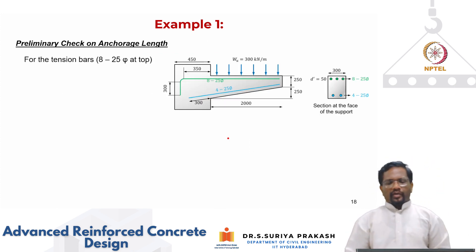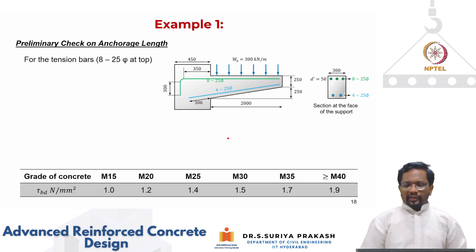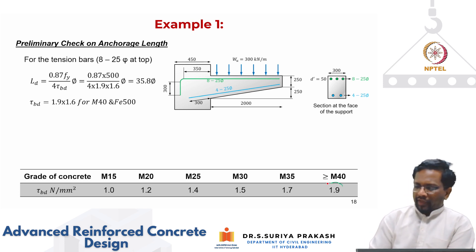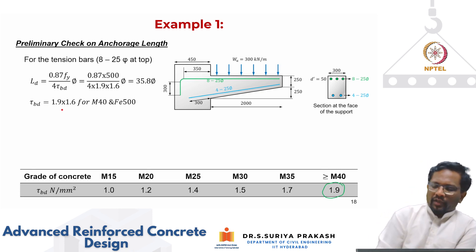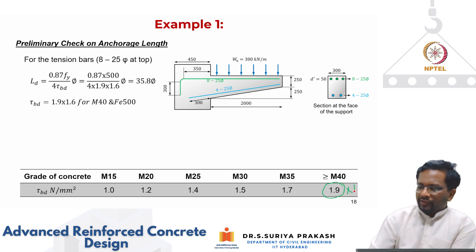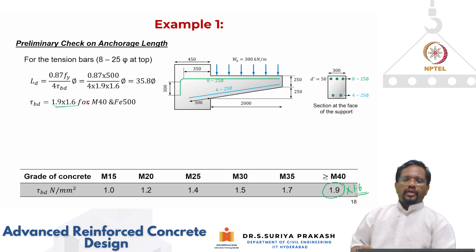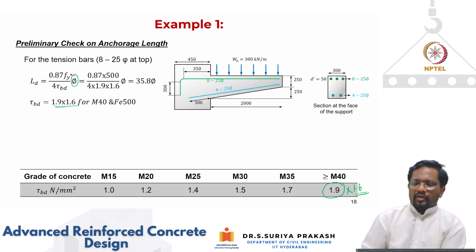For tension bars — eight numbers of 25 mm diameter — we look at bond stress. Using M40 grade concrete, tau_bd is 1.9 for smooth bars. For deformed bars, we multiply by 1.6, giving a 60% increase. The development length equation is: Ld = 0.87 × fy divided by 4 × tau_bd, where the diameter of the bar is 25 mm.